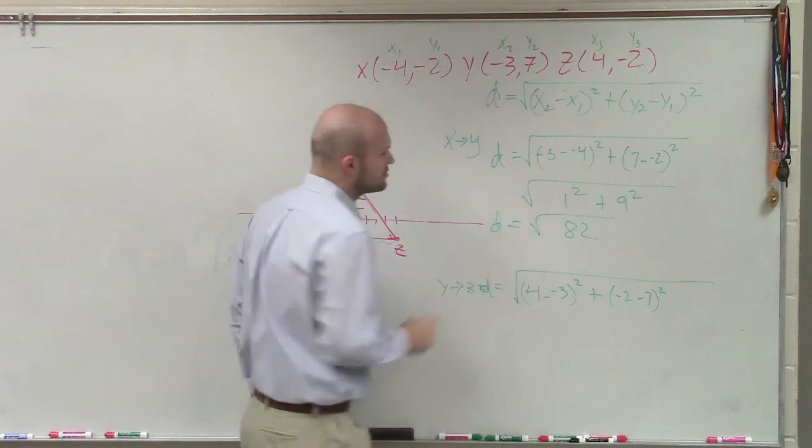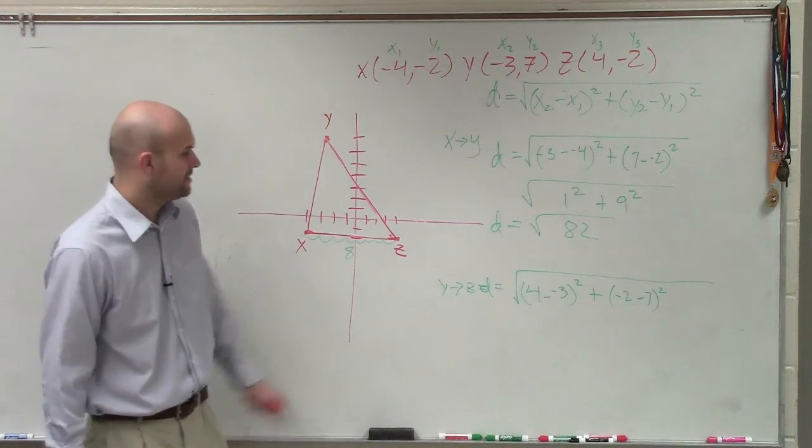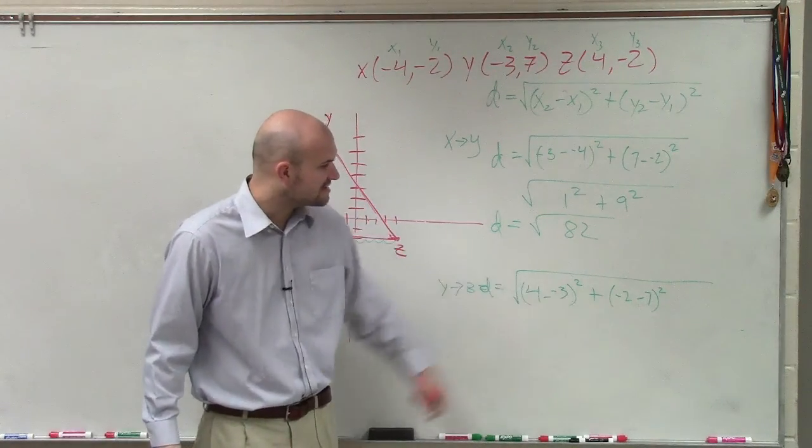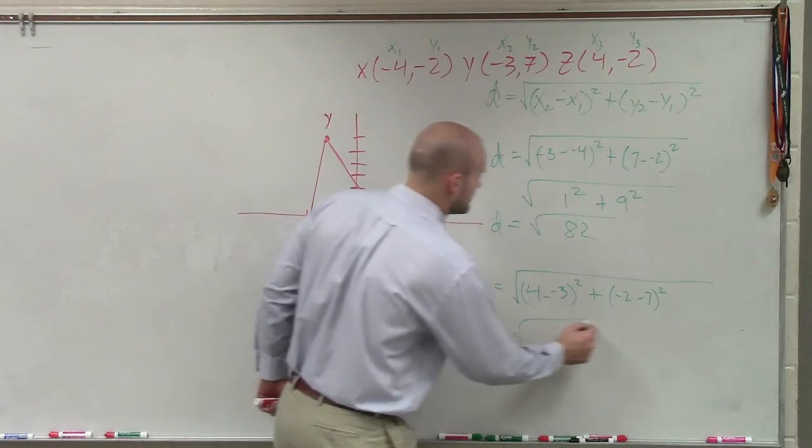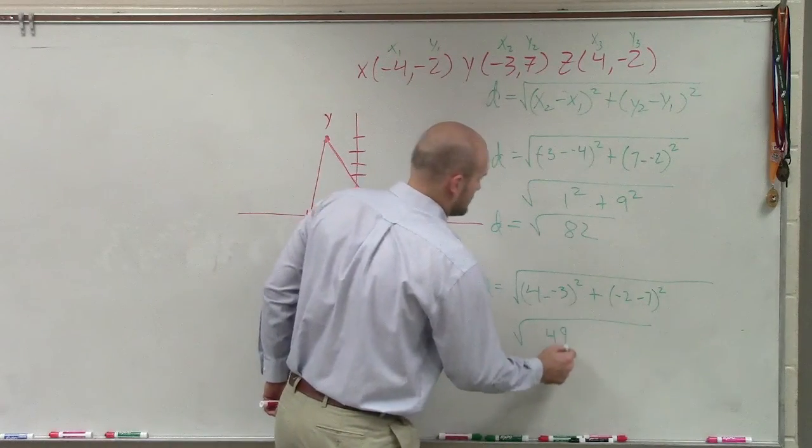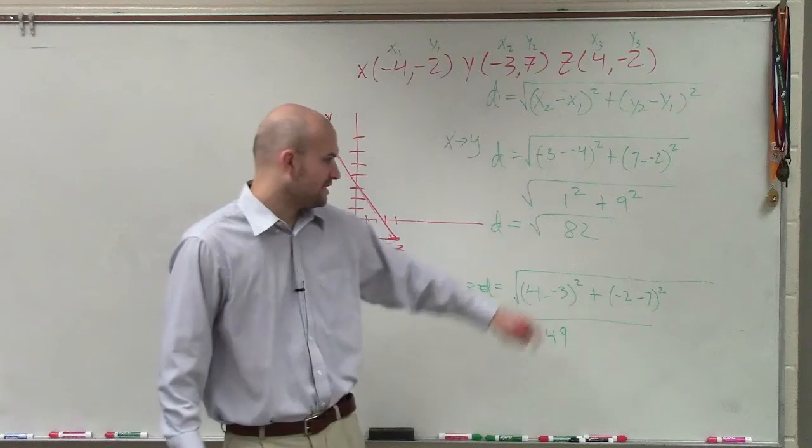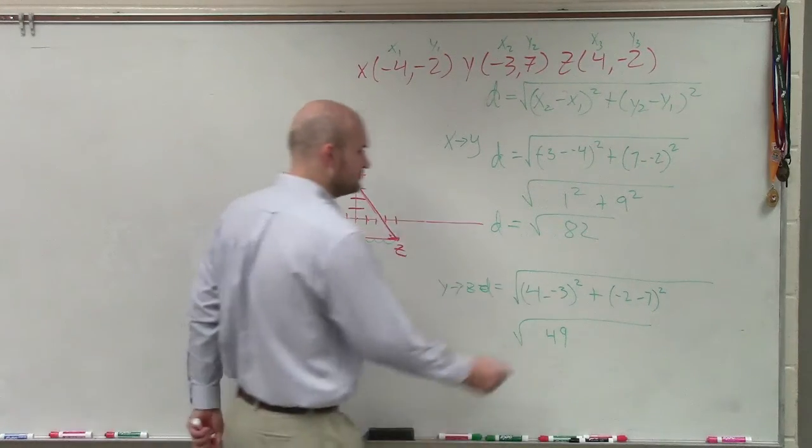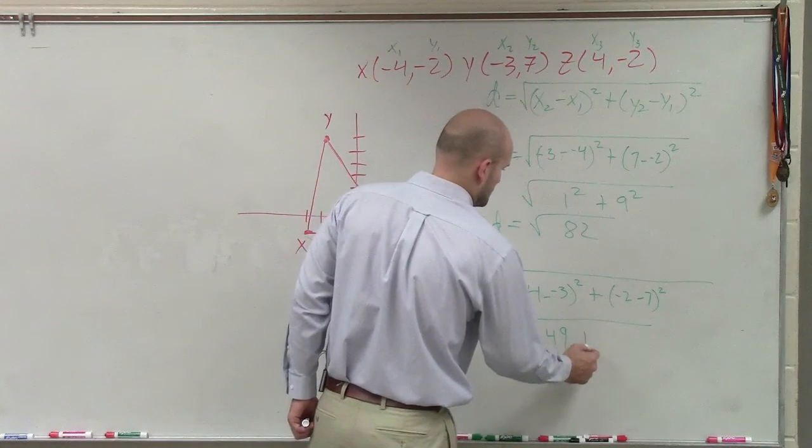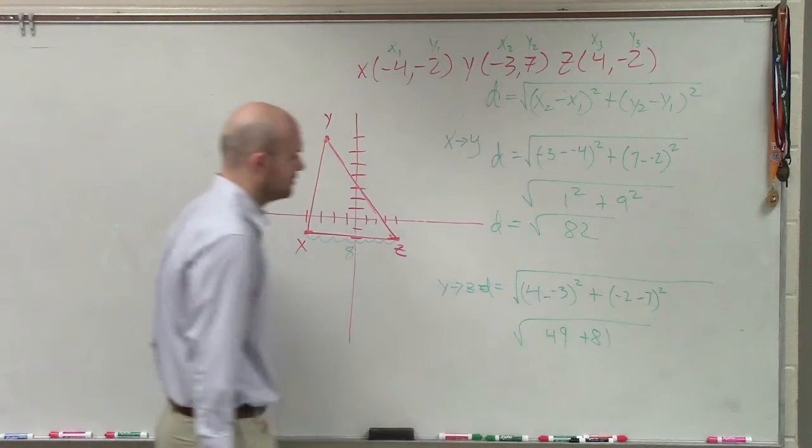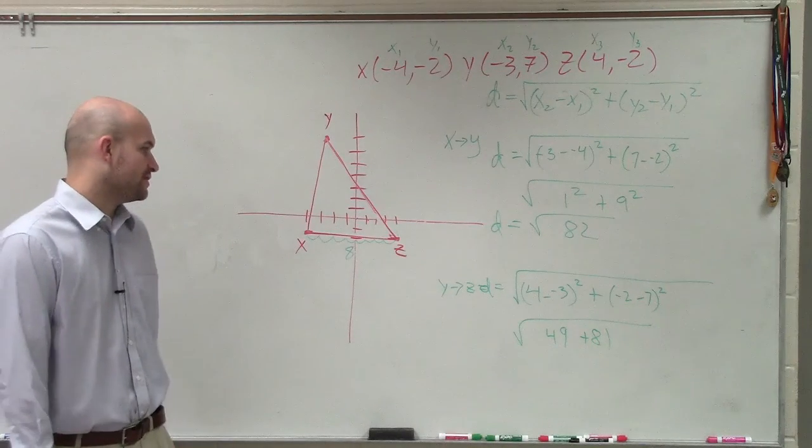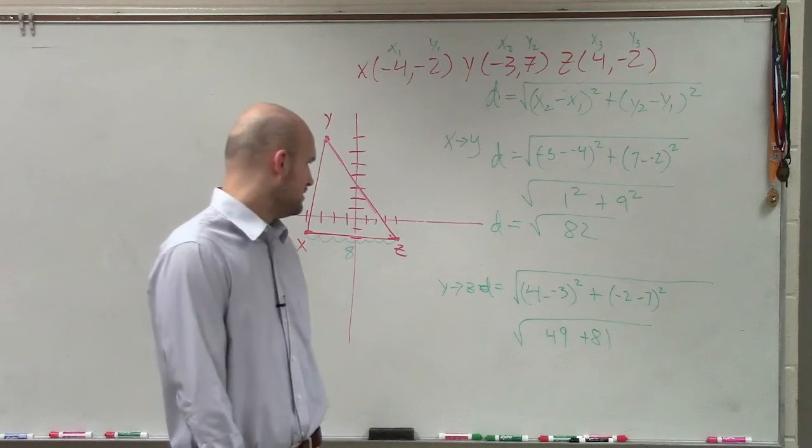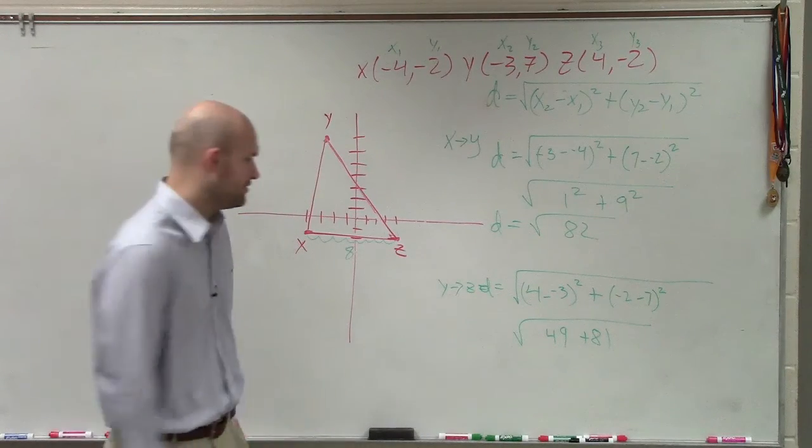I haven't talked about simplifying square roots yet, so we'll just leave it at that. Over here, I have 7. 7 squared is 49. And then over here, I have 9, which is 81. So that's going to be 49 plus 81, which is 130.